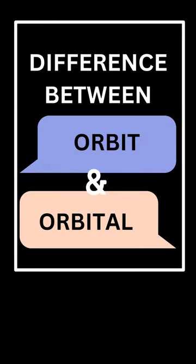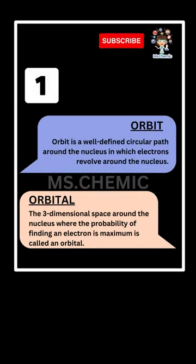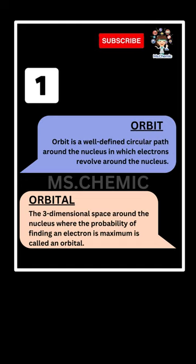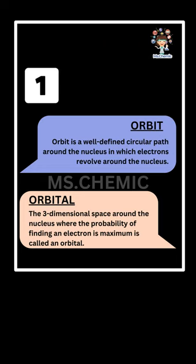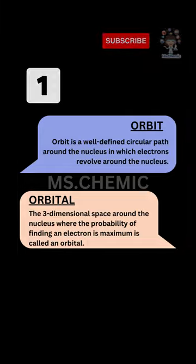Difference between Orbit and Orbital. An orbit is a well-defined circular path around the nucleus in which electrons revolve. The three-dimensional space around the nucleus where the probability of finding an electron is maximum is called an orbital.